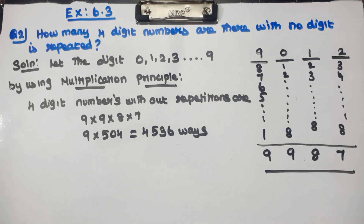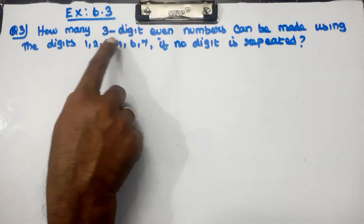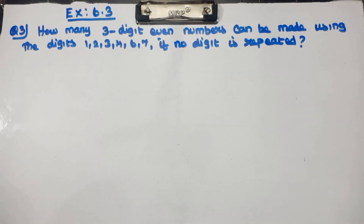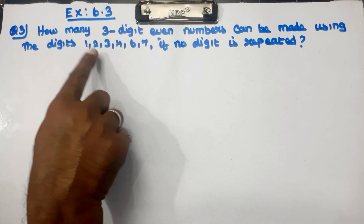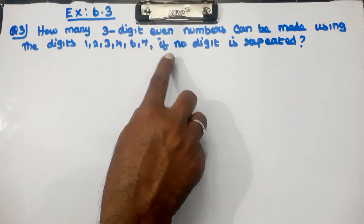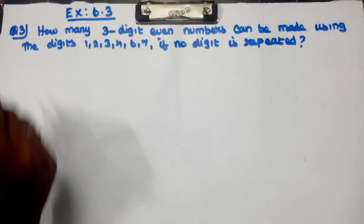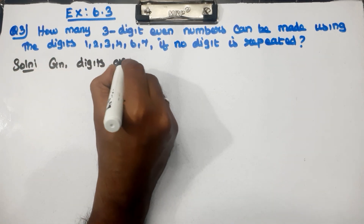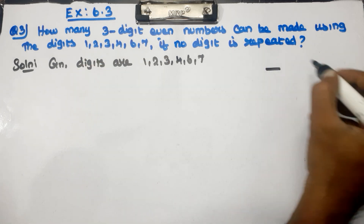So we can answer question number 2. Next, question number 3: How many 3-digit even numbers can be made using the digits 1, 2, 3, 4, 6, 7 if no digit is repeated? Even numbers end in 2, 4, 6, 8, or 0. The multiplication principle is easy to apply here.